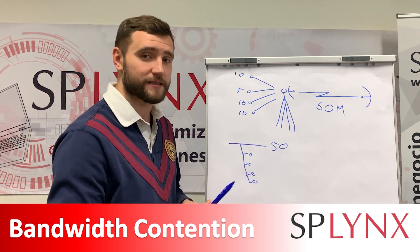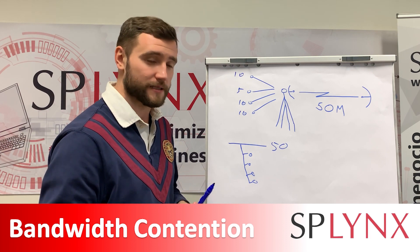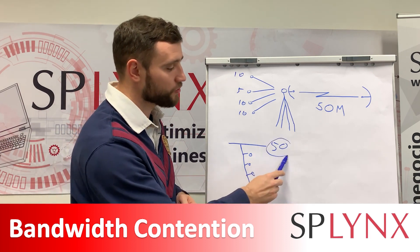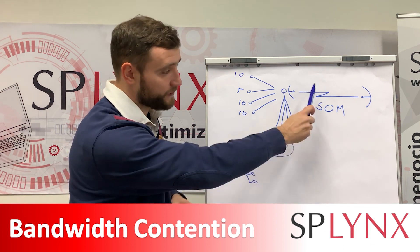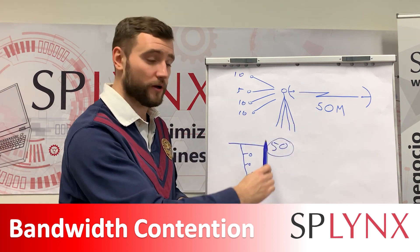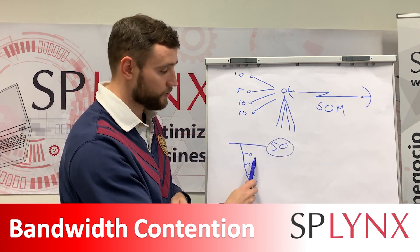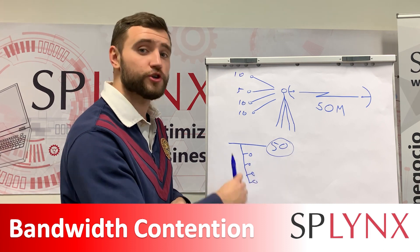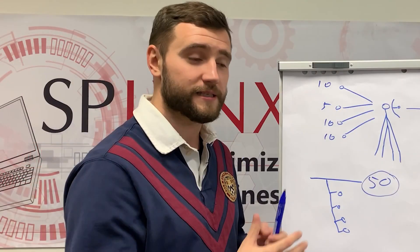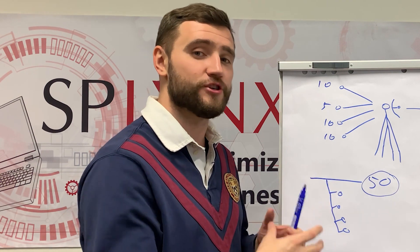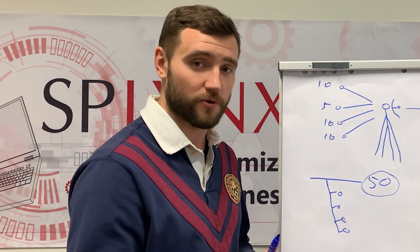How do we prevent that, and how do we fairly share the bandwidth between clients? We can set up one main rule that will limit the 50 Mbps, and all customers will be placed under that rule. You will see that these customers then share the speed — and this is called contention.